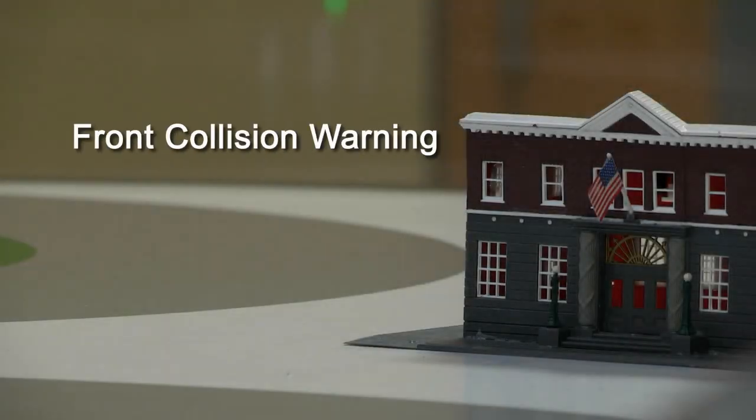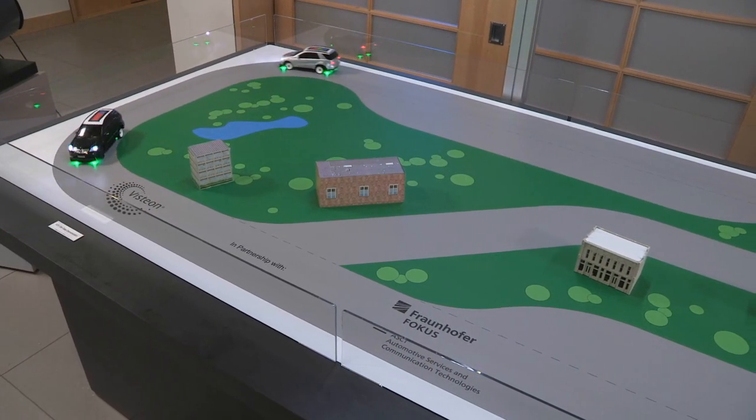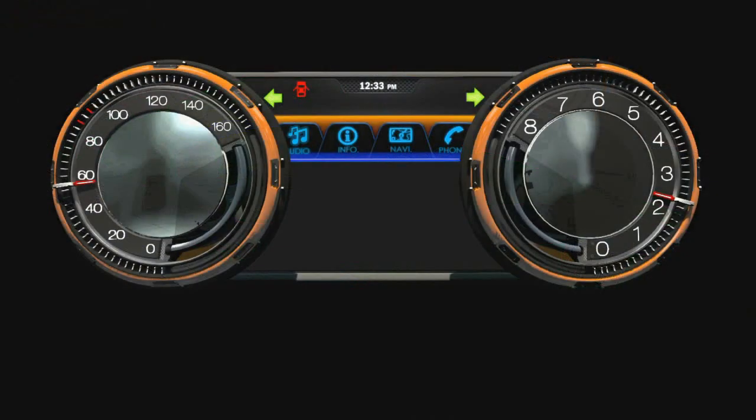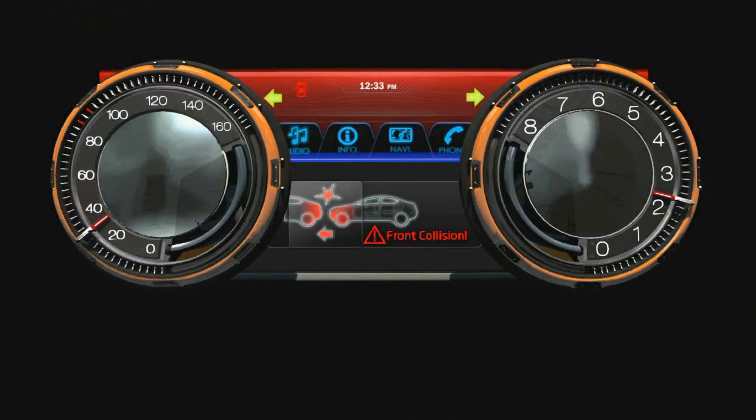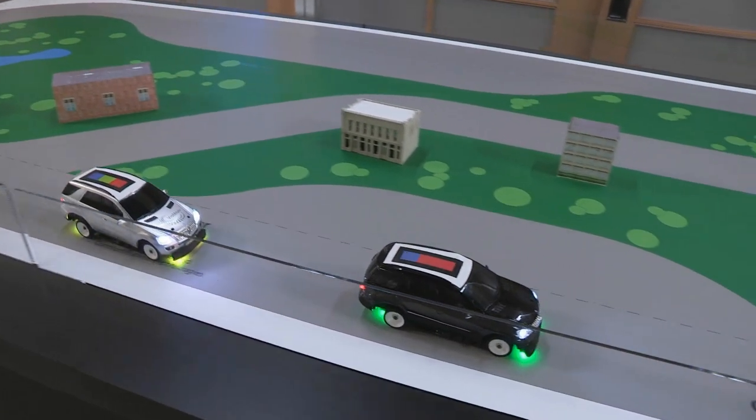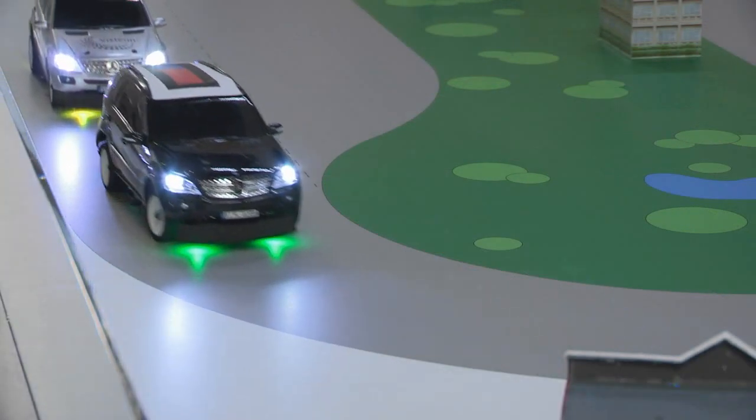This use case, front collision warning, demonstrates a V2V communication. The driver is alerted when the vehicle in front of ours is traveling at a slower speed. Our instrument cluster delivers a warning signal that we are quickly approaching this slow-moving vehicle. The early warning allows us additional time to slow down and avoid a collision.